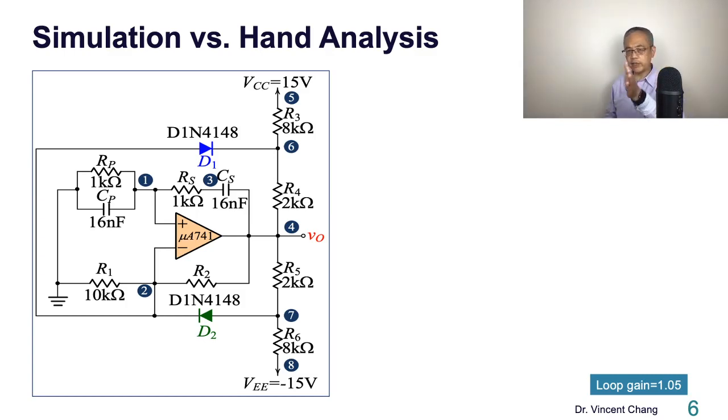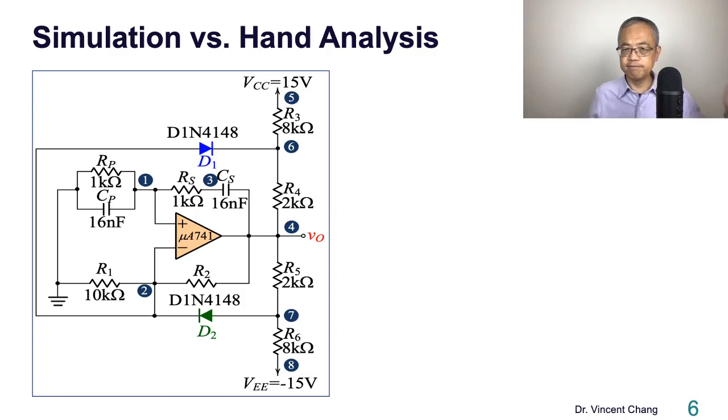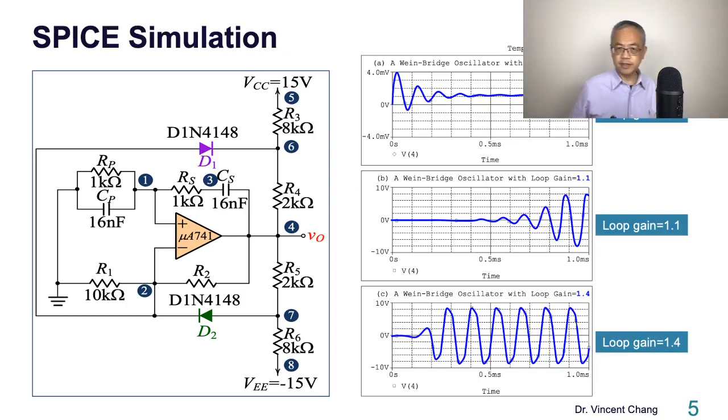Also you see from this, if 1.4, the sinusoid waveform also suffers harmonic distortion. This is also one of the reasons the loop gain cannot be too big.